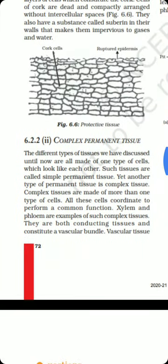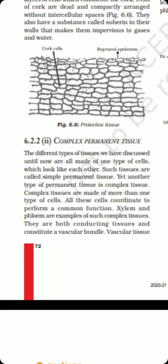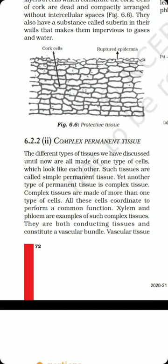In the present video, we are going to start with the complex permanent tissues. A complex permanent tissue is a kind of tissue which consists of more than one kind of elements or more than one kind of cells.